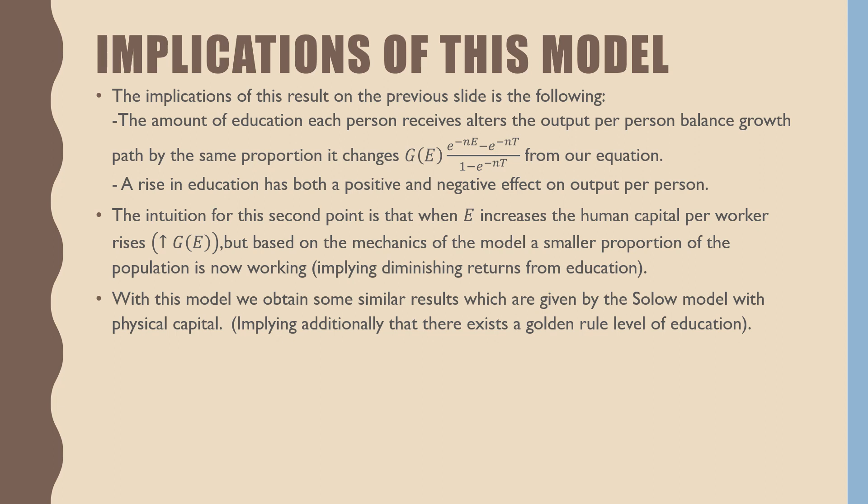The intuition for the second point is that when E increases, human capital per worker rises. But based on the mechanics of the model, specifically, the fact that people have to go to school before they go to work, less of the population is now working at a given time, implying that there are diminishing returns from education.